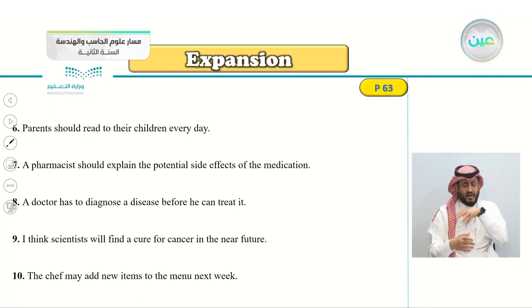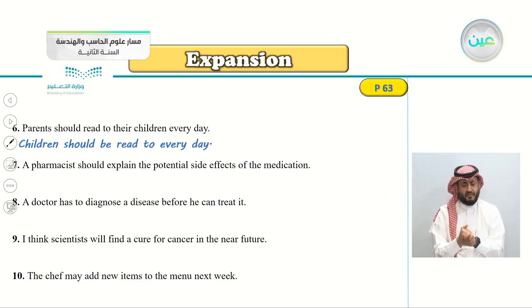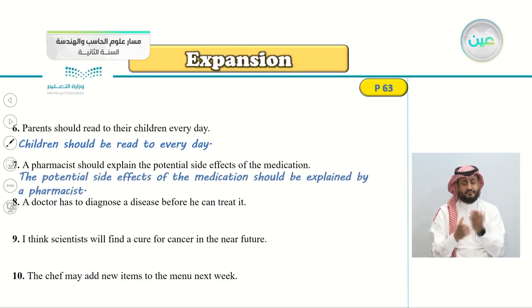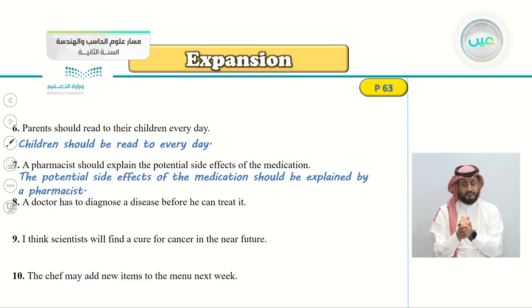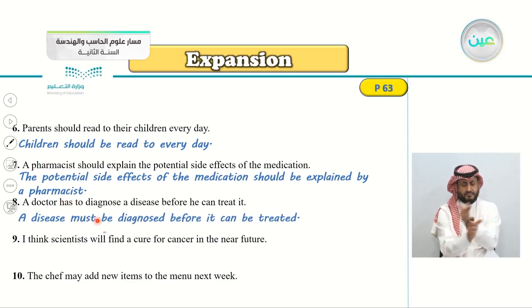Number six: 'Parents should read to their children every day.' Answer: 'Children should be read to every day by parents.' Number seven: 'A pharmacist should explain the potential side effects of the medication.' Answer: 'The potential side effects of the medication should be explained by the pharmacist.' Number eight: 'A doctor has to diagnose a disease before he can treat it.' Answer: 'A disease must be diagnosed before it can be treated by a doctor.' Note that 'has to' becomes 'must' in the passive.